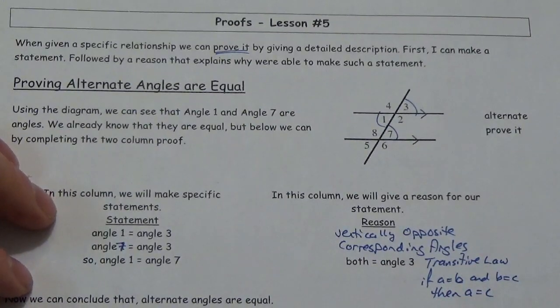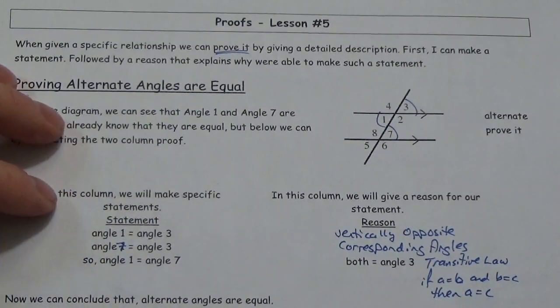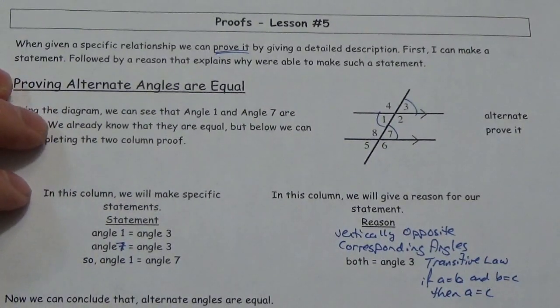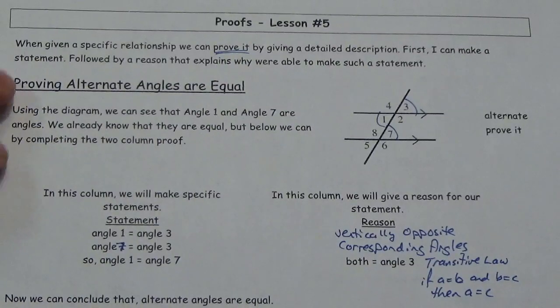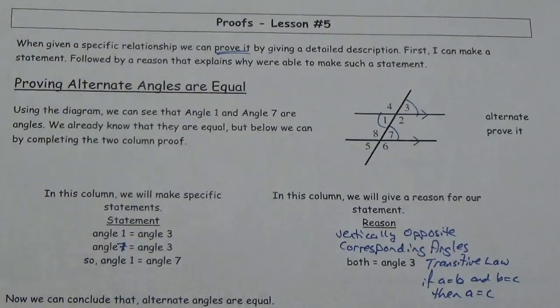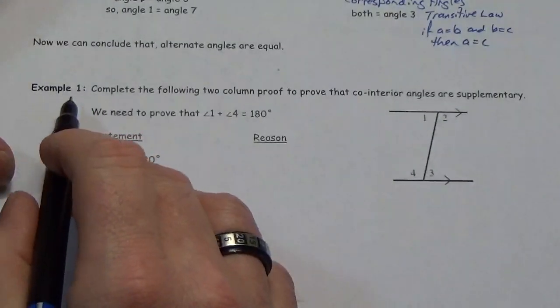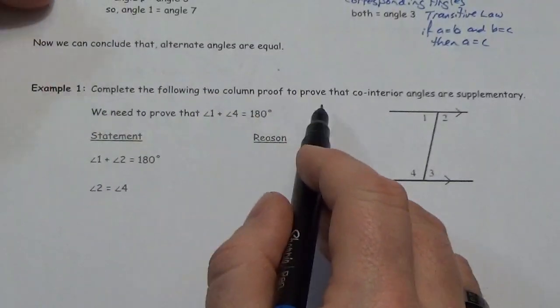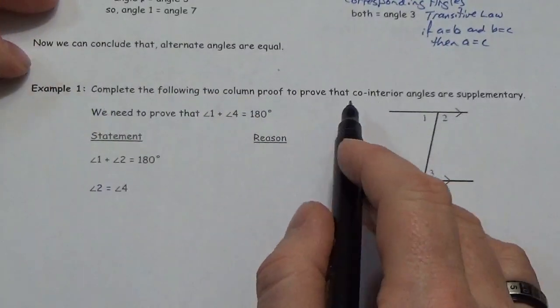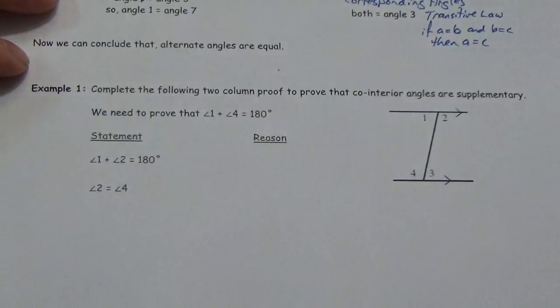I love this stuff — this was one of my favorite things to do in high school mathematics. Anyway, let's take a look at an example. Complete the following two-column proof to prove that the co-interior angles are supplementary.